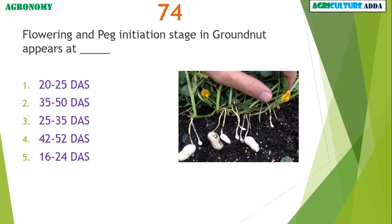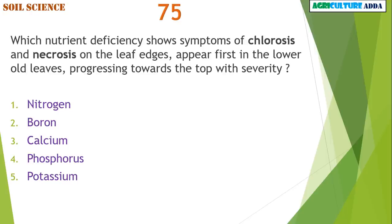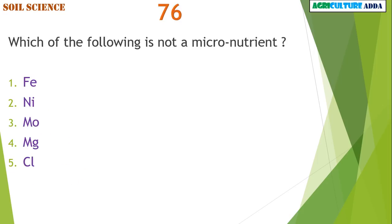Flowering and peg initiation stage in groundnut appears at 35 to 50 days after sowing. Which nutrient deficiency shows symptoms of chlorosis and necrosis on leaf edges appearing first in lower old leaves progressing towards the top with severity? Potassium. Which of the following is not a micronutrient? Magnesium.